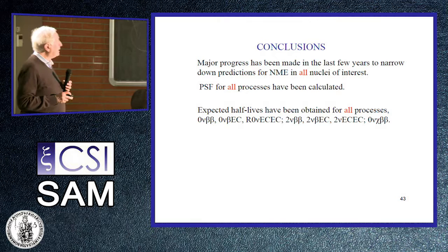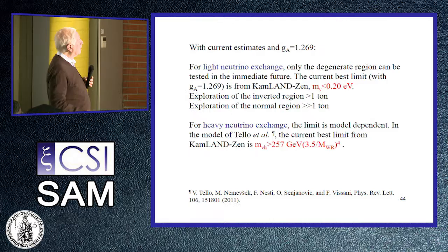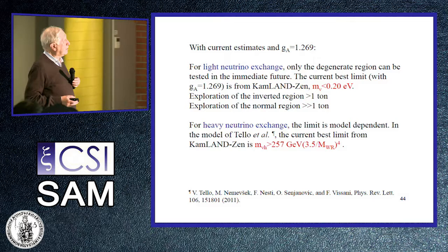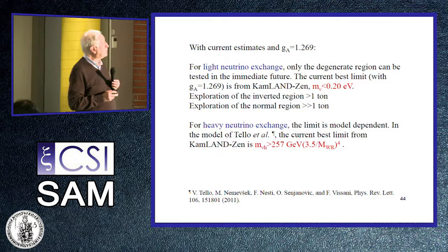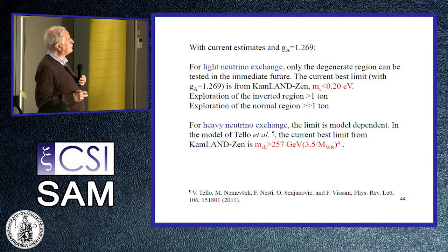The conclusion of this part is that we now have all the formulas needed. We have calculated nuclear matrix elements and phase-space factors for all processes, and therefore we have calculated expected half-lives for all the processes indicated. However, all these estimates are done with no quenching. The current best limit with no quenching from KamLAND-Zen gives a mass of less than 0.2 electron volts.